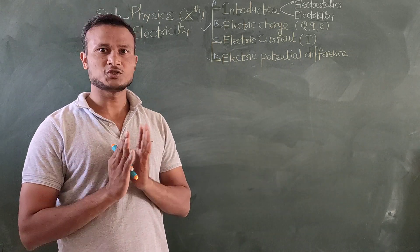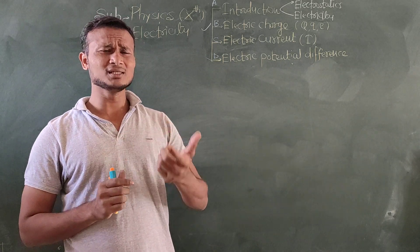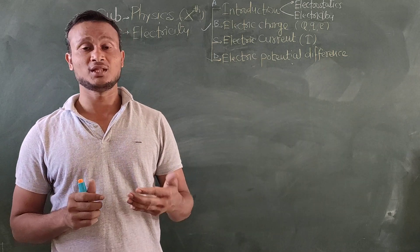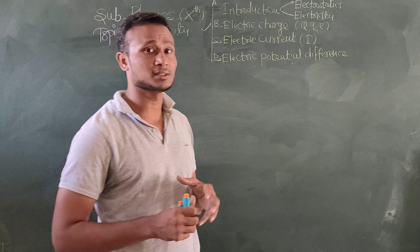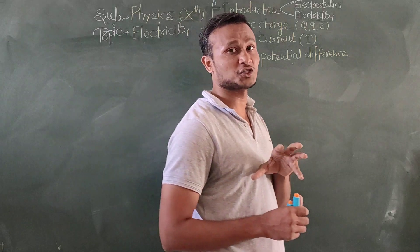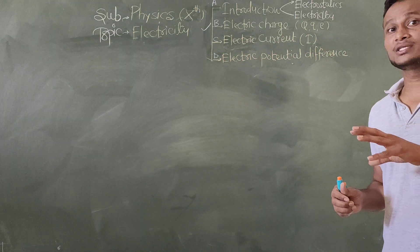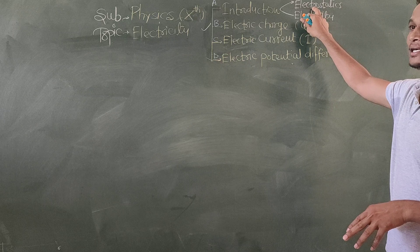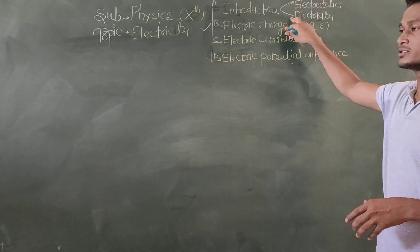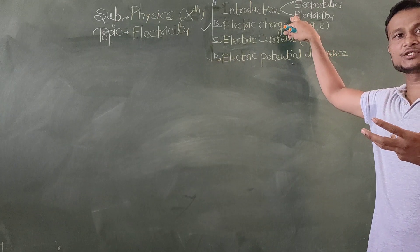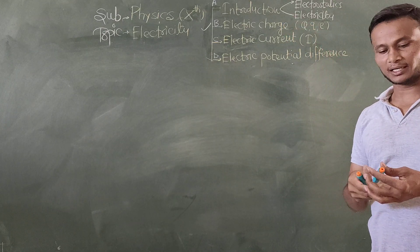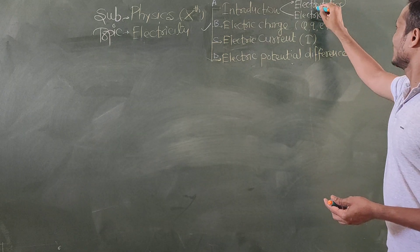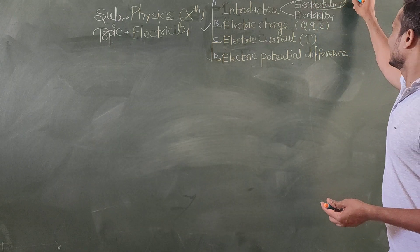Basically, electricity is a branch of physics which deals with the study of electric charges in motion. There is one more branch which deals with the study of electric charge which is at rest — that is electrostatics. So these are the branches of physics which deal with the study of electric charge, and electrostatics deals with the study of electric charges at rest.